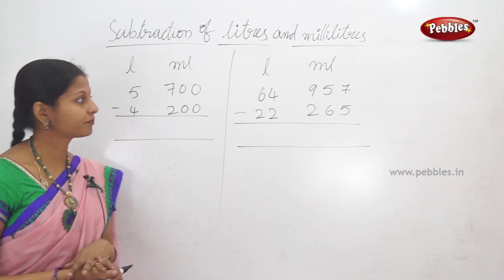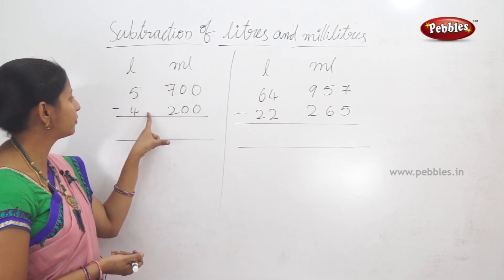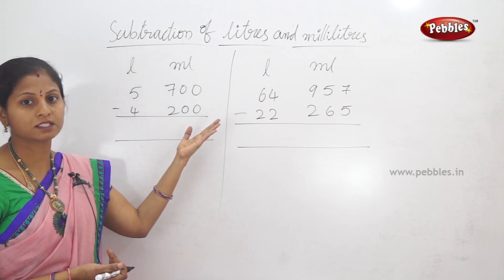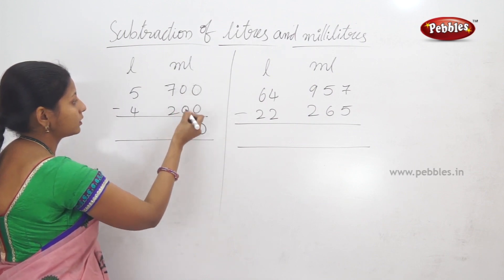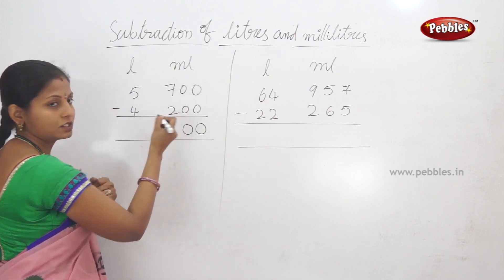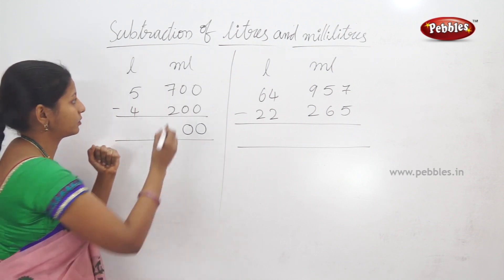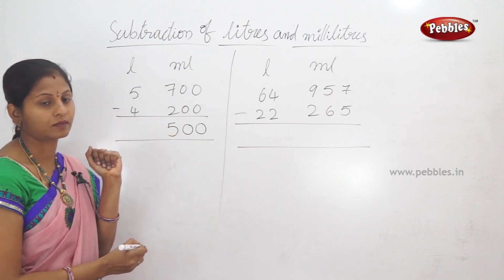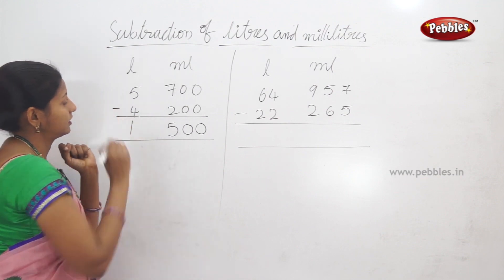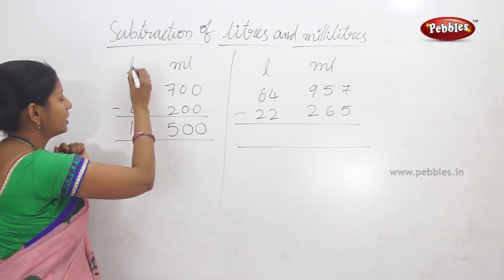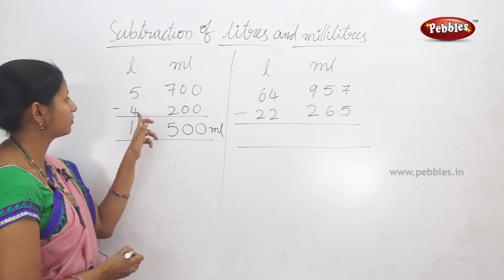Subtraction of liters and milliliters — 2 examples. First: 5 liters 700 milliliters minus 4 liters 200 milliliters. Start with milliliters: 0 minus 0 equals 0, 0 minus 0 equals 0, 7 minus 2 equals 5. So 500 milliliters. Then liters: 5 minus 4 equals 1. Answer: 1 liter 500 milliliters.